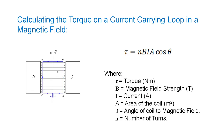The torque on a coil made up of N turns is simply the torque generated by a single current carrying loop in a magnetic field multiplied by the number of loops making up the coil. Our equation then becomes TAU equals NBIA cos theta, where TAU is the torque in newton meters, B is the magnetic field strength in Tesla, I is the current in amps, A is the area of the coil in meters squared, theta is the angle between the plane of the coil and the magnetic field, and N is the number of turns or number of loops making up the coil. This is the form of the equation given in the syllabus.